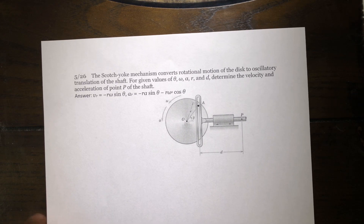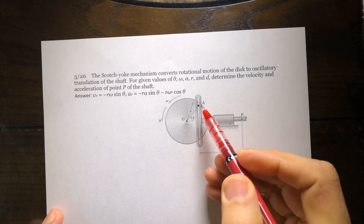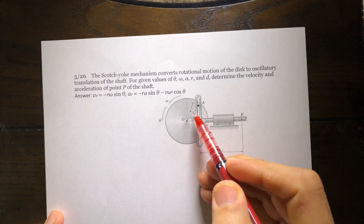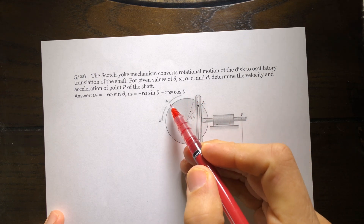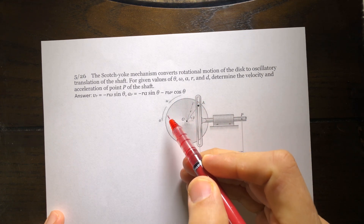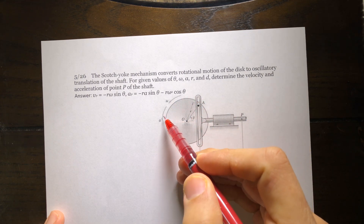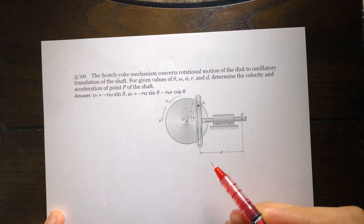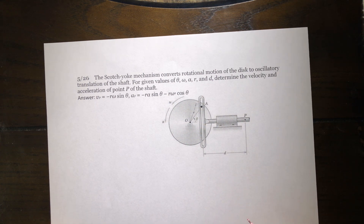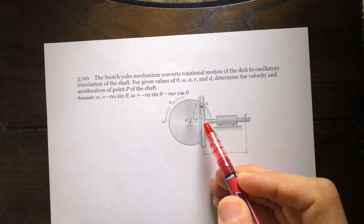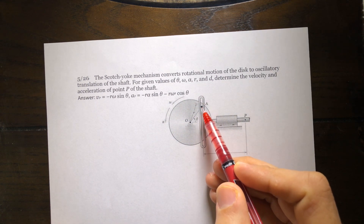Let's do another example. Here we have this disk, which is rotating with angular velocity of omega and angular acceleration of alpha. And there is a pin on this disk.